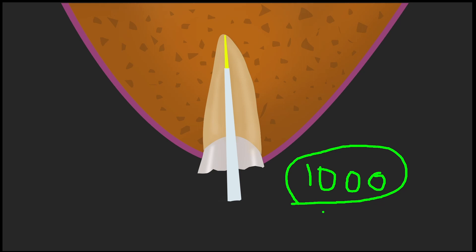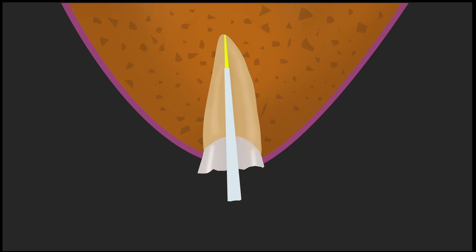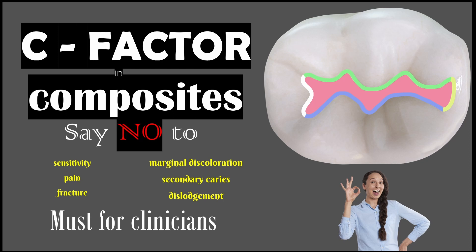In essence, whenever there is a deep cavity, we have to build up with composite in small increments. Whenever it is a shallow one, we can go for a single-increment buildup. Understanding C factor and minimizing it to 1 or less at each and every clinical situation is very important for doing a successful composite restoration.